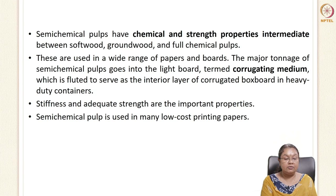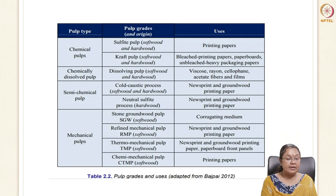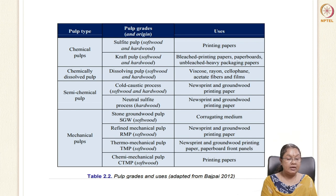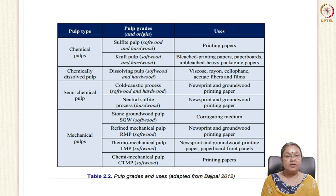A table shows different types of pulp, their pulp grades, and applications. Chemical pulp can be developed from both softwood and hardwood — grades include sulfide pulp and craft pulp. Chemically dissolved pulp is called dissolving pulp. Semi-chemical pulp includes the cold caustic process and neutral sulfide process — the neutral sulfide process uses only hardwood. Mechanical pulping includes stone groundwood pulp, refined mechanical pulp, thermomechanical pulp, and chemimechanical pulp. Each pulp type is used for developing different papers — printing papers, corrugating media, newsprint, etc. We'll discuss the remaining part of paper development in coming sessions.